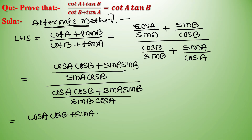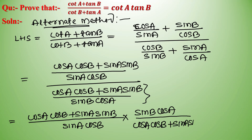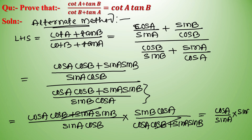Dividing numerator by denominator, the (cos A · cos B + sin A · sin B) terms cancel, giving sin A · sin B / (sin A · cos B) multiplied by cos A · sin B / (sin A · sin B), which simplifies to cos A/sin A · sin B/cos B = cot A · tan B = RHS. Hence proved.